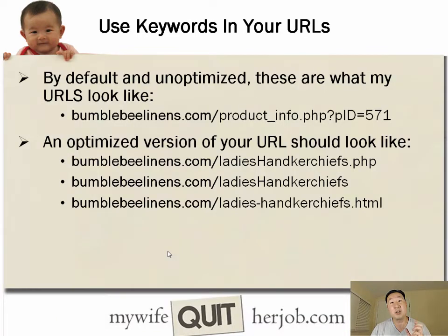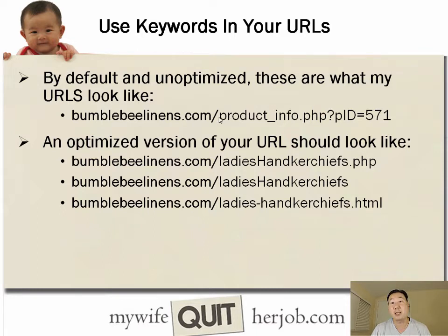You also want to use your keywords in your URLs. An unoptimized URL looks like: bumblebeelinens.com/productinfo.php?PID=571 — you'd have absolutely no idea what was on that page. But an optimized version would look like bumblebeelinens.com/ladies-handkerchiefs. By using the keyword in your URL, that actually helps in the rankings as well.